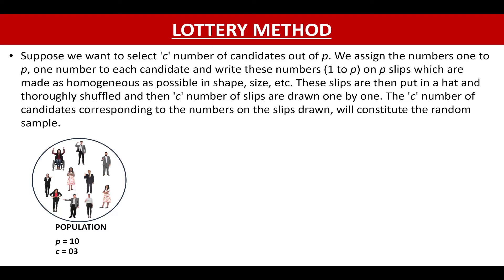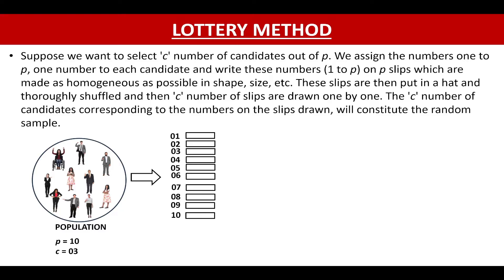Let me explain this with an example. Suppose we have a population size of 10 and we want to select 3 candidates, so here P is equal to 10 and C is equal to 3. In the first stage, we will allot the numbers 1 to 10 to each candidate and write their numbers on 10 slips which are homogeneous in shape, size, etc. We then shuffle these slips in a hat and select 3 slips one by one. The candidates corresponding to the number on the slip will constitute the random sample.